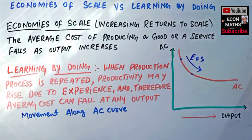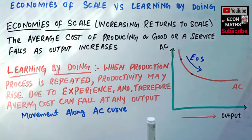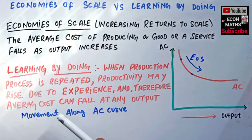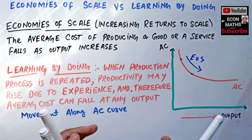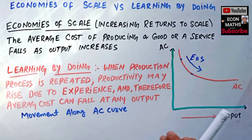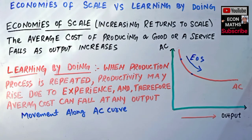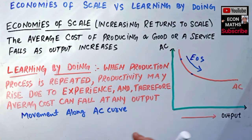So what is meant by learning by doing? Learning by doing is when the production process is repeated, productivity may rise due to experience. We don't commit the same mistakes that we would have committed earlier, and by that our average cost can fall at any output level.